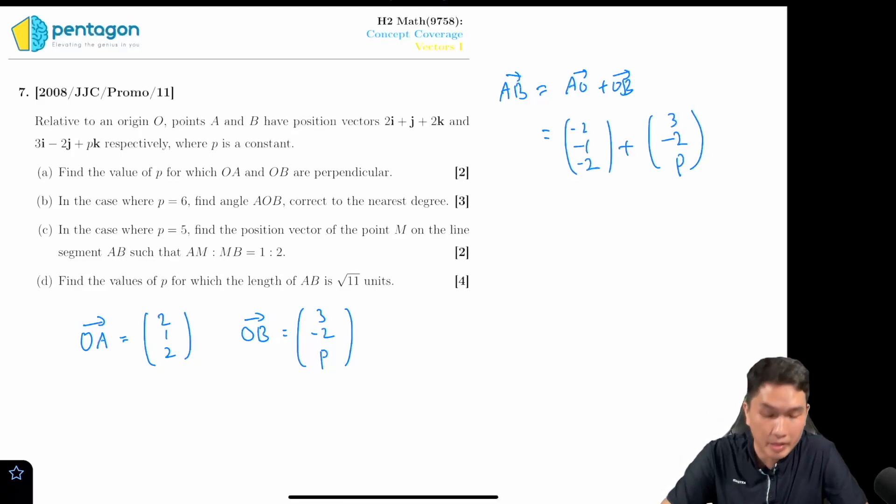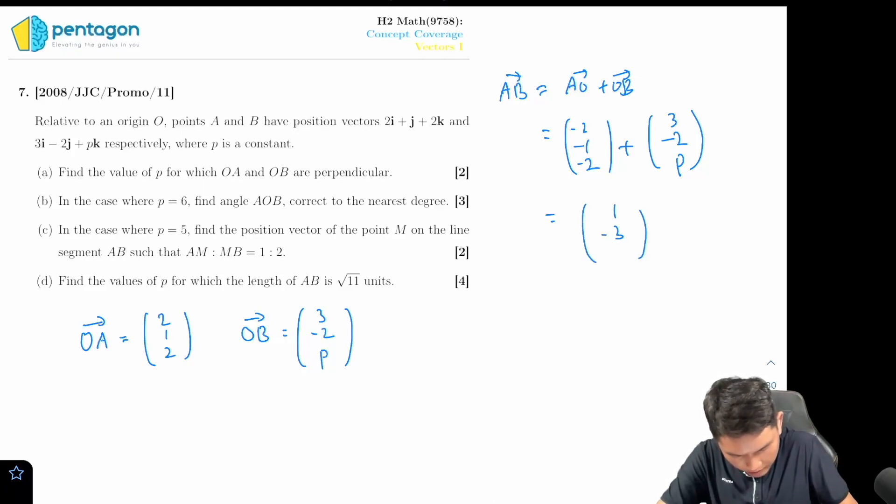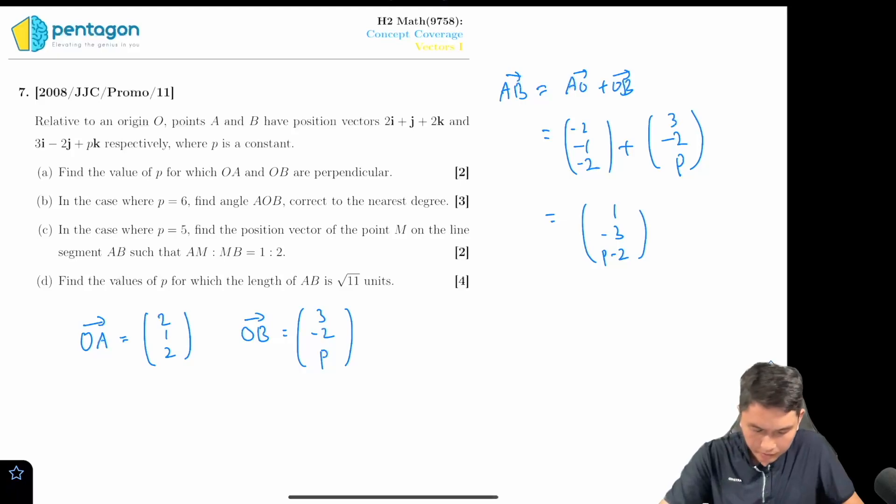Remember that we are not given a value of p in this question, and this will work out to be one negative three p minus two. So now I define the magnitude of AB.